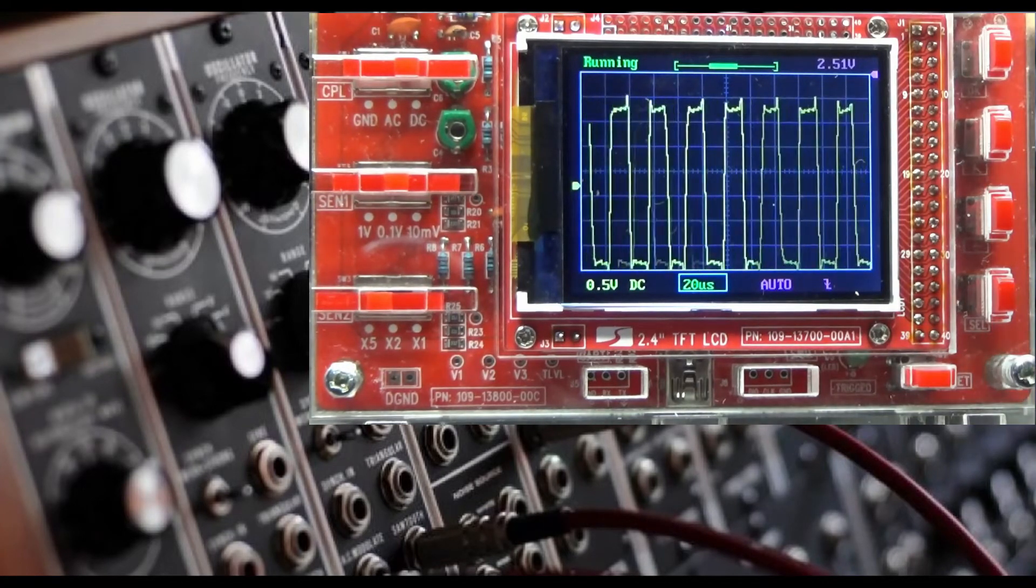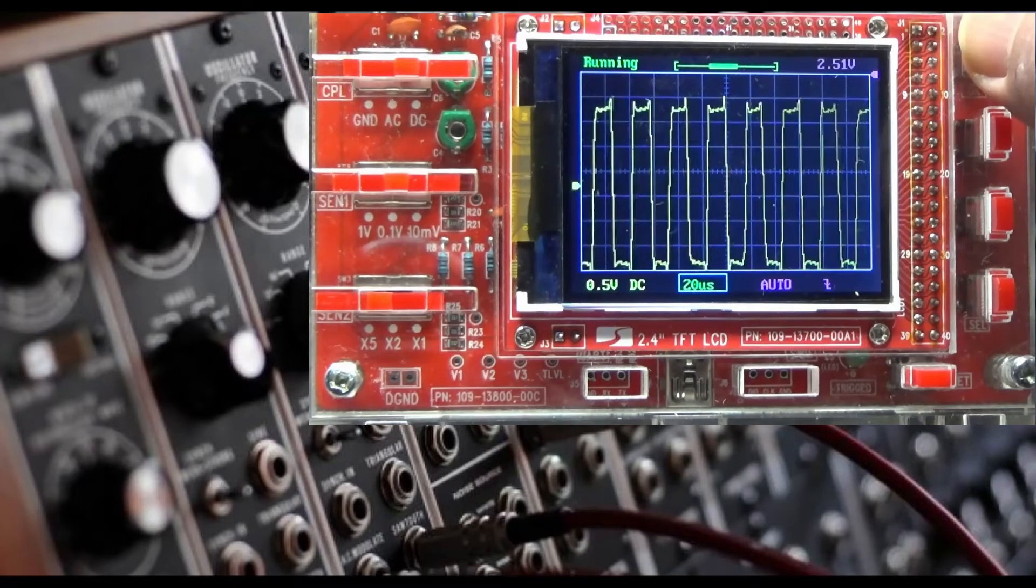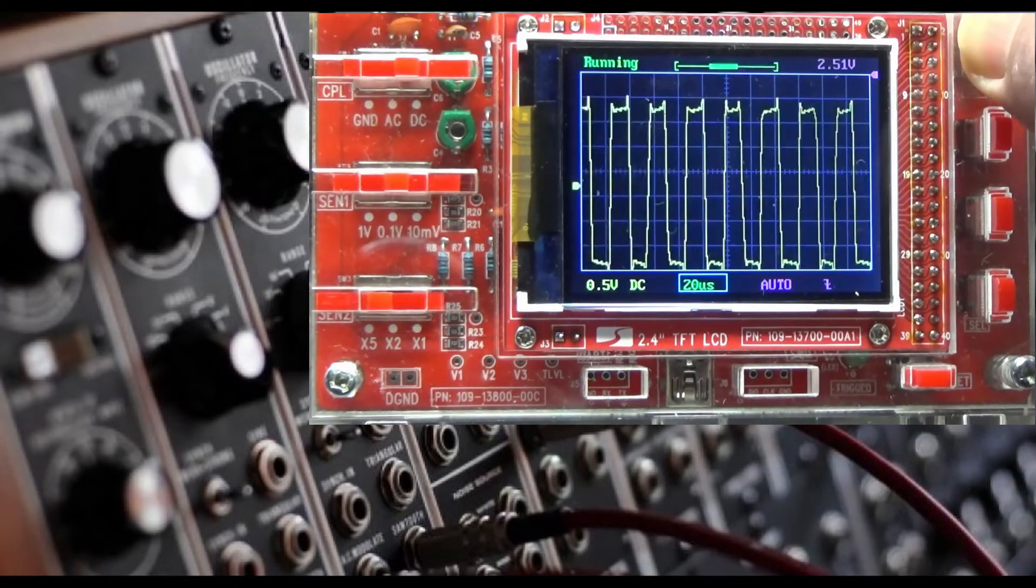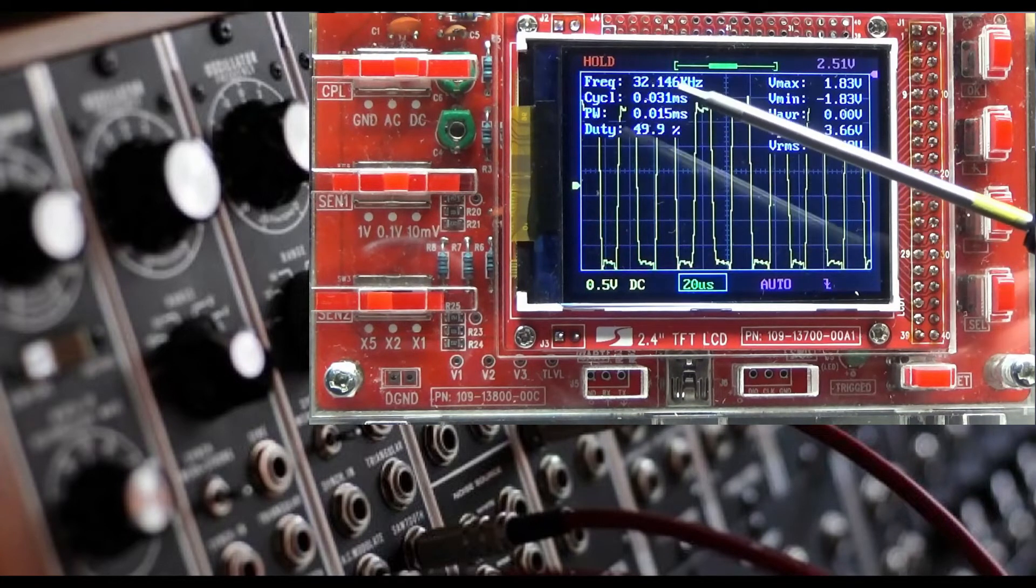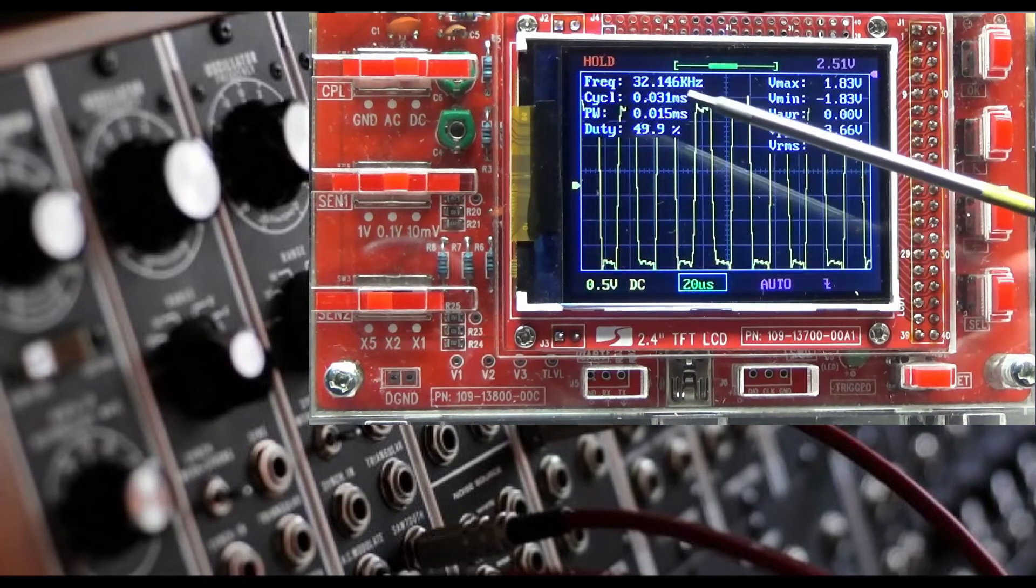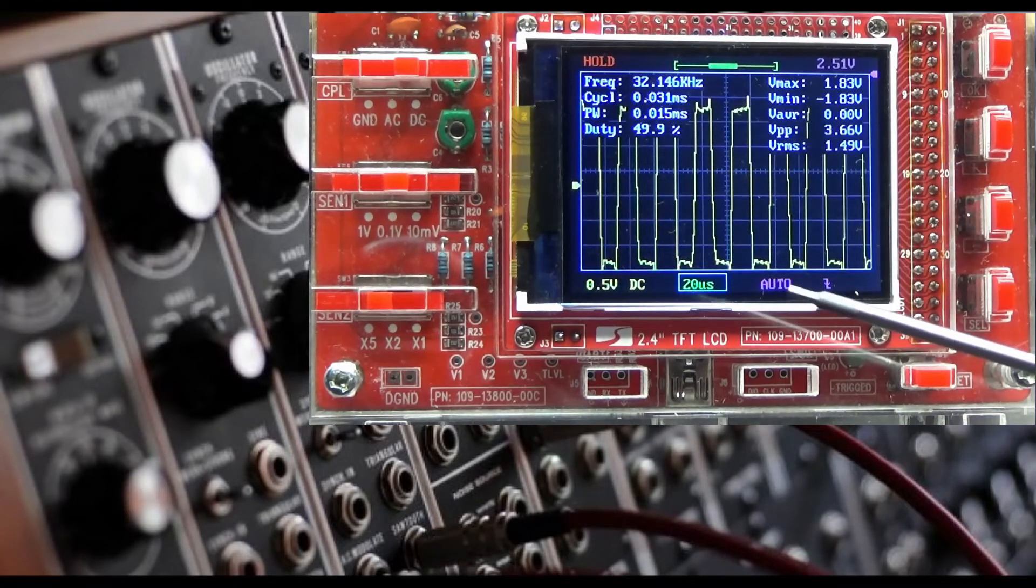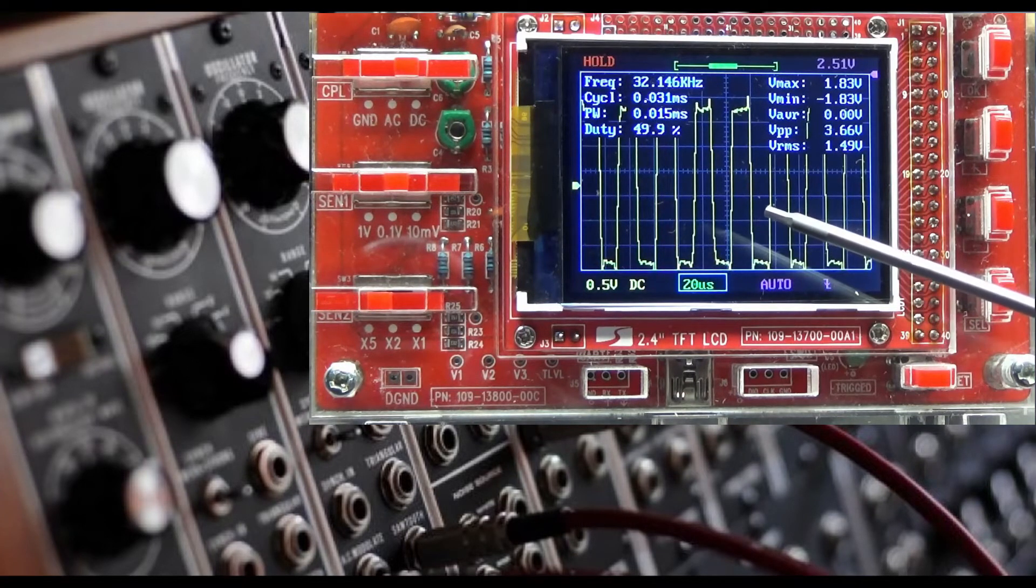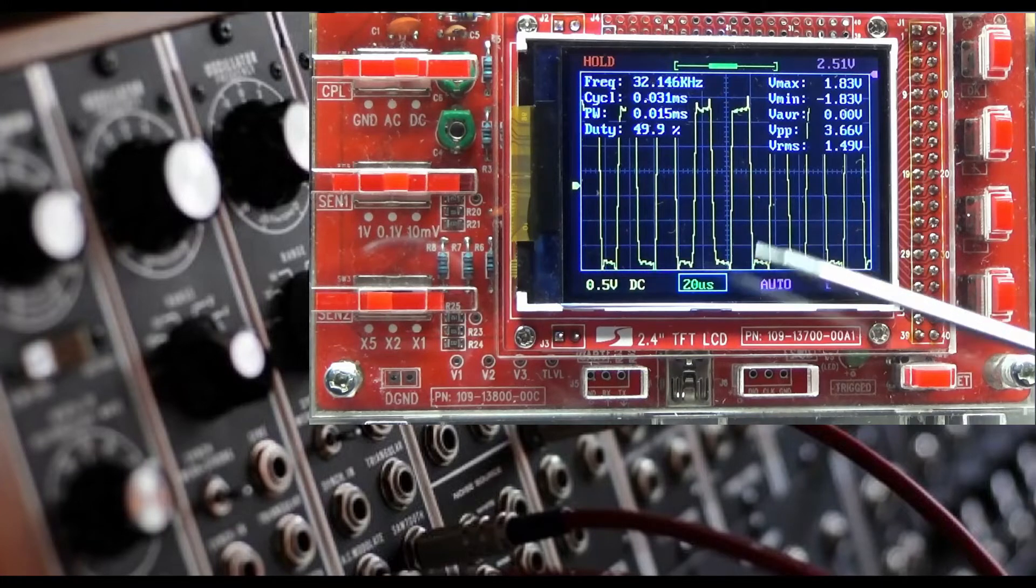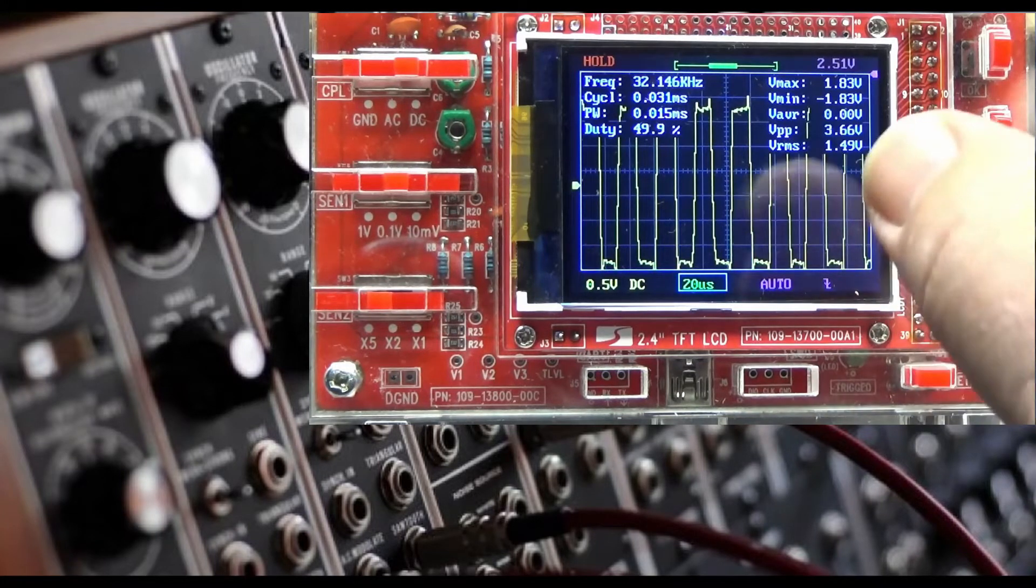Now if I press this upper right hand corner button down for a couple seconds, now that we can see the numerical data, we can see that this waveform is running right around 32 kilohertz, which is to be expected because we have configured this to be a 32 kilohertz sample playback. Let's return to full view.